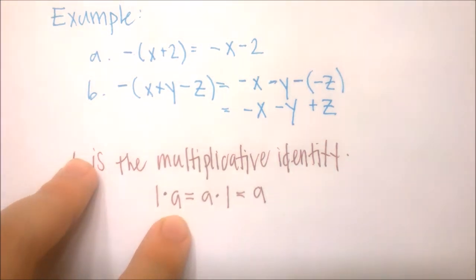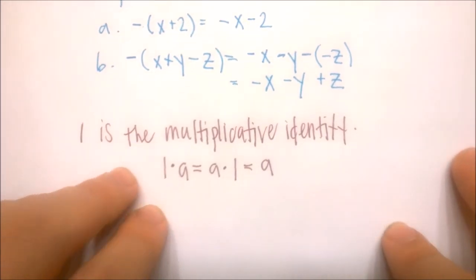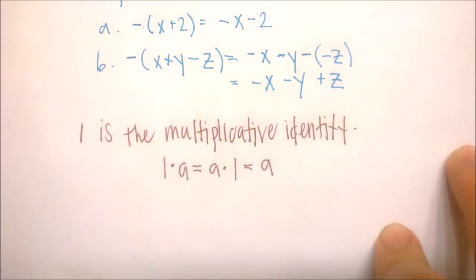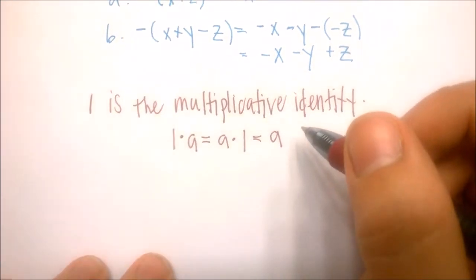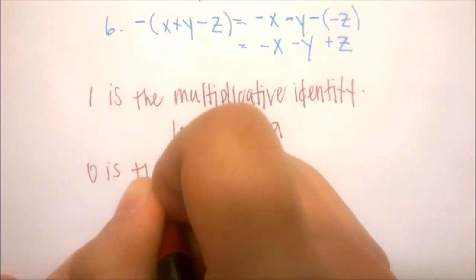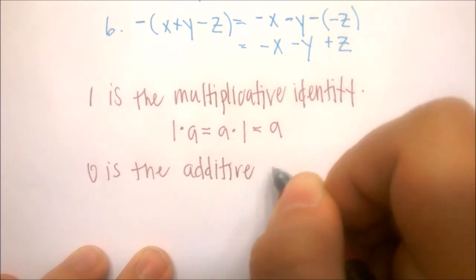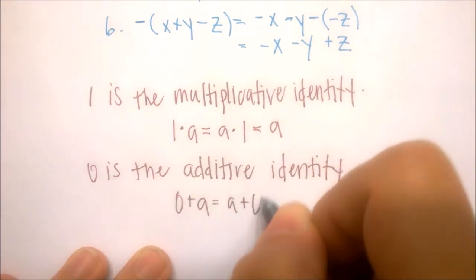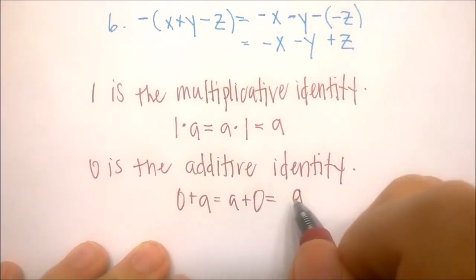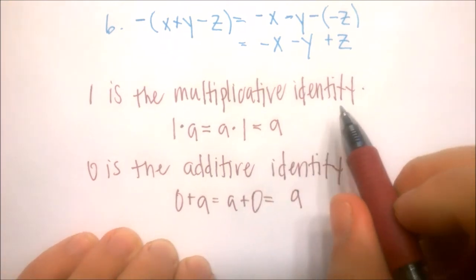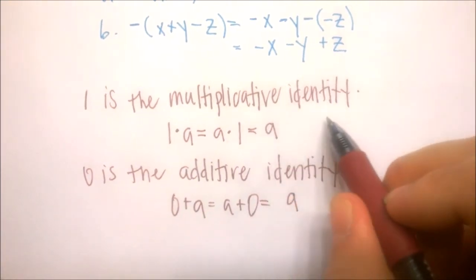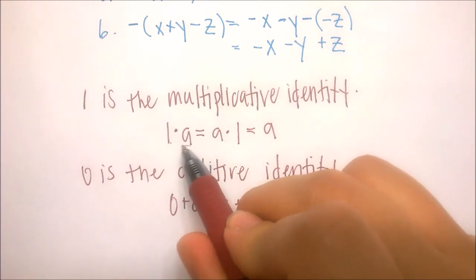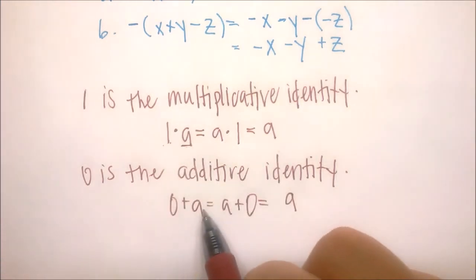An identity means that when you perform an operation with the identity element, it doesn't change the number. For multiplication, 1 is the identity. For addition, 0 is the additive identity, because adding 0 to any real number — 0 plus a, or a plus 0 — still gives you a. So 1 times a is just a, and 0 plus a is just a.